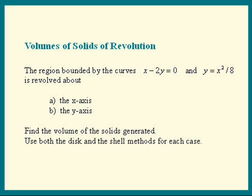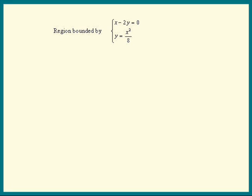In all these problems, we have to draw the region. The reason is we have to know how to slice it up into tiny pieces, either vertically or horizontally. x minus 2y equals 0 is a linear equation that represents a straight line. And y equals x squared over 8 is a parabola, symmetric around the y-axis. It will be useful to find the intersections before we graph it.